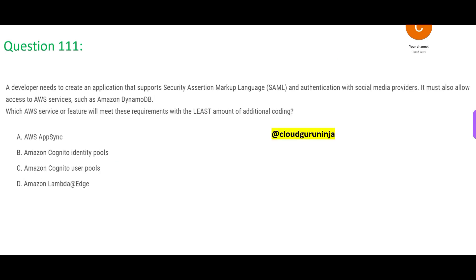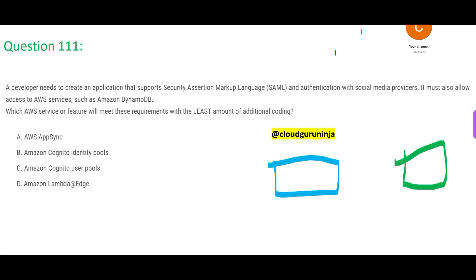Now let us look at the next question. See, this blue box is an application and the green box is your social media providers — it can be Facebook, Twitter, anything — and then there is a DynamoDB database, which is a NoSQL high-performance database. They want you to create an application that supports SAML authentication. Here is a thumb rule: whenever you see any interaction with social media, you should opt for Cognito.